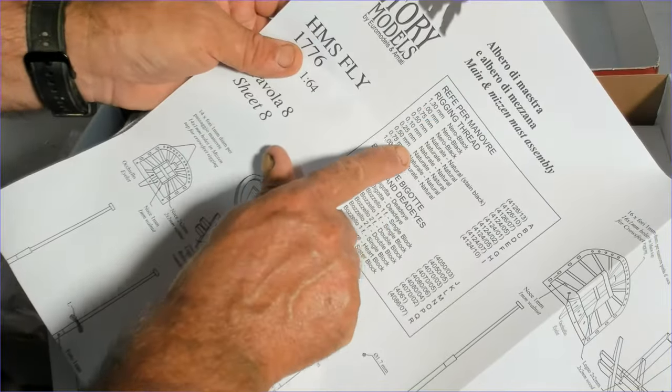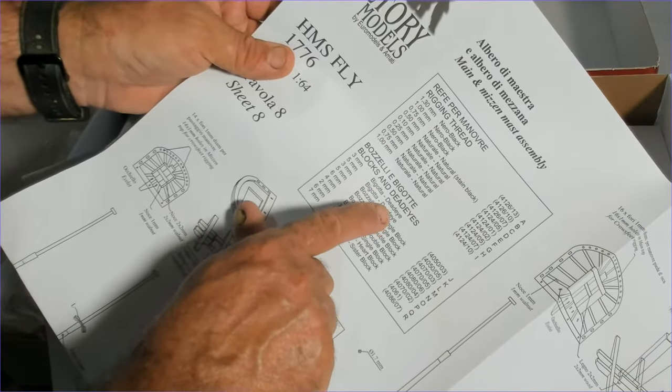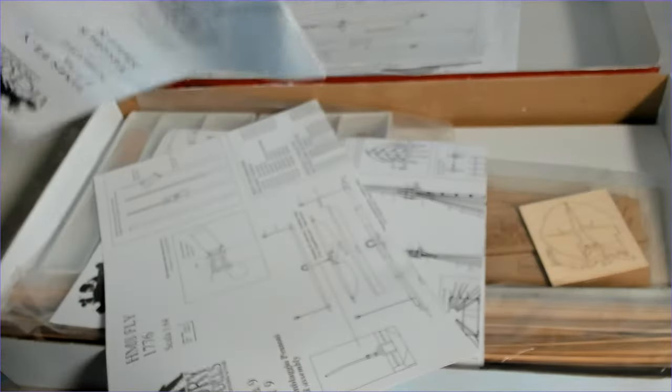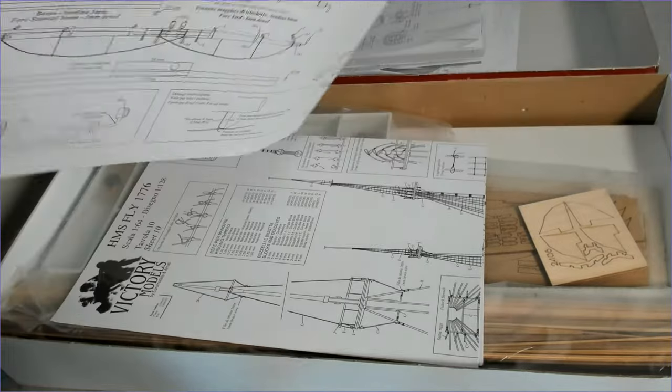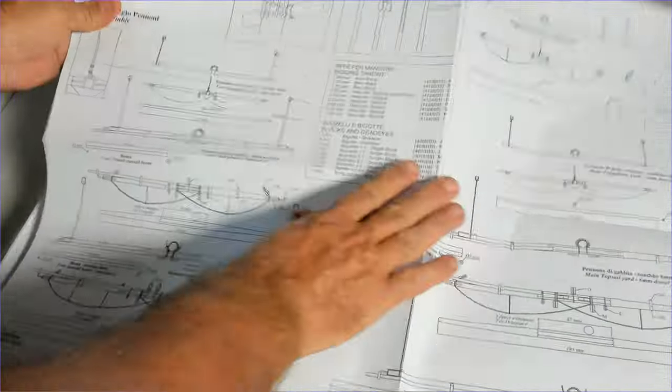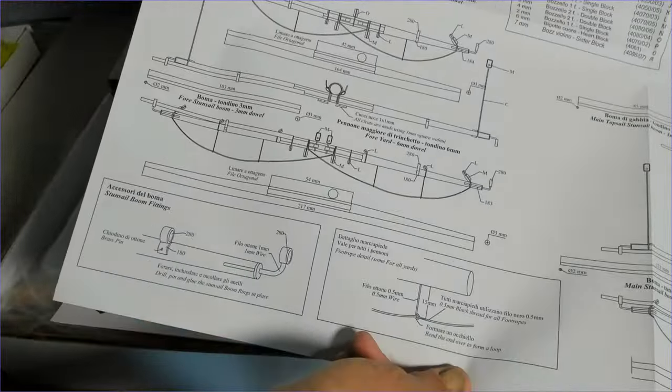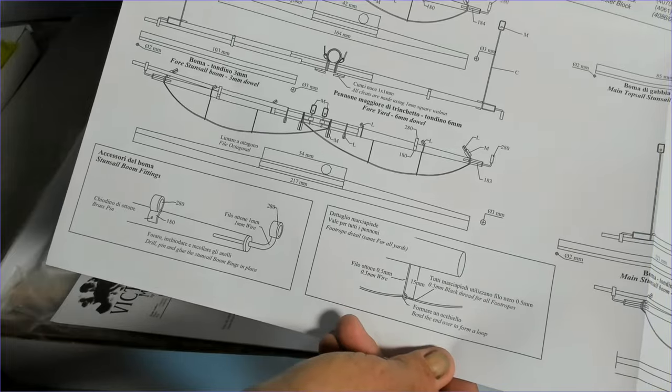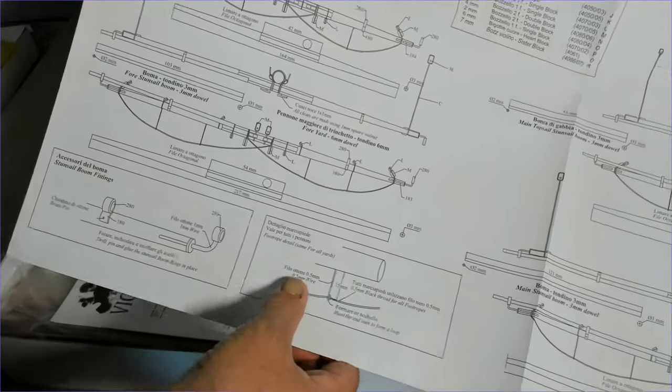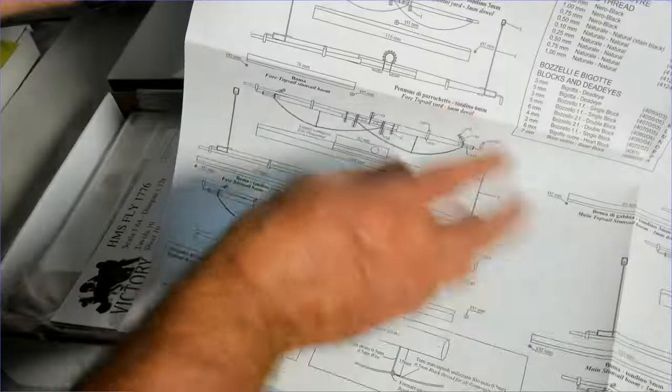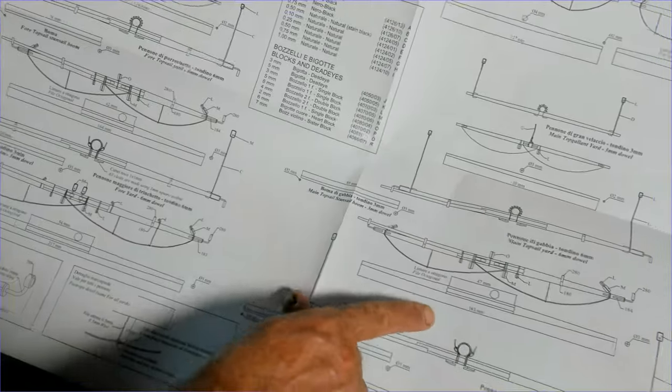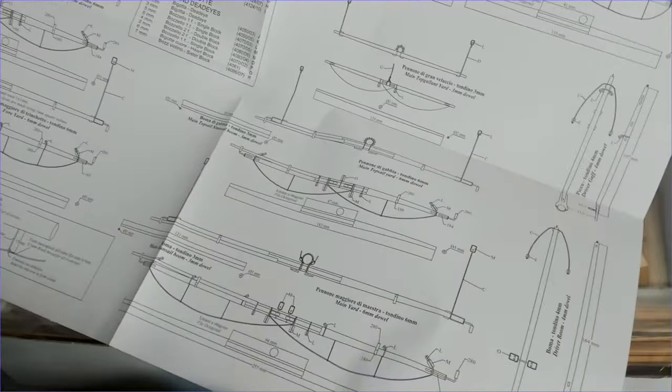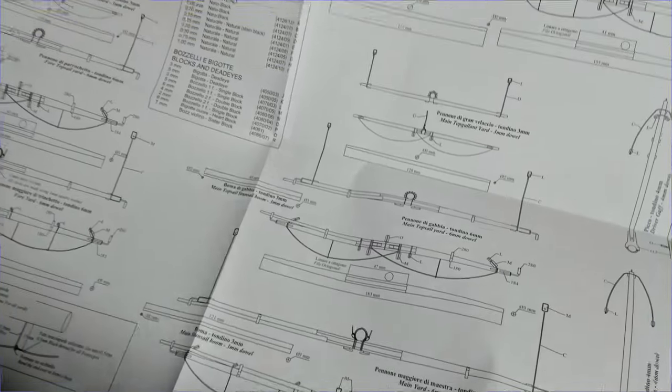Sheet nine, all about the yards, showing how to make different pieces that go on there. We've got just diameters and measurements. So that all looks quite easily to understand.